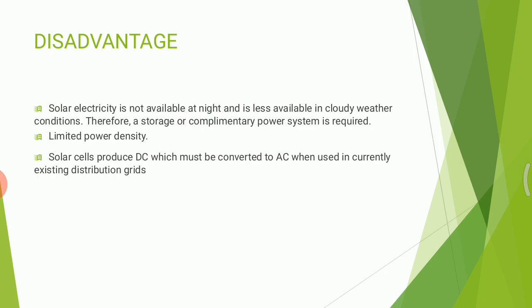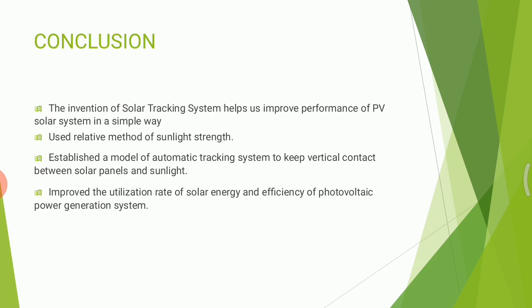Disadvantages: in cloudy conditions or at night time there is no solar energy available, so this is a limitation. Other disadvantages include limited power density, and solar cells produce DC which must be converted to AC — we cannot use DC directly.